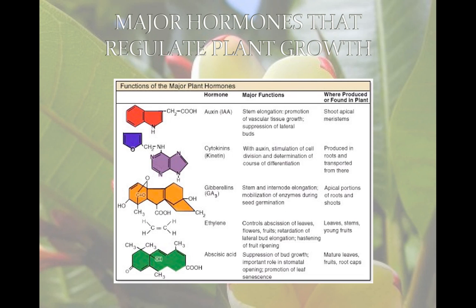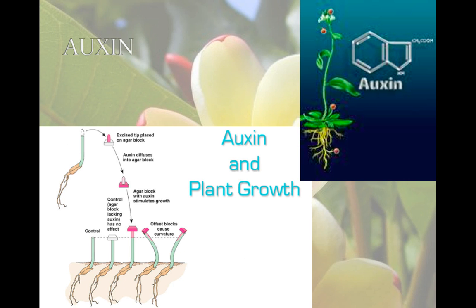There are five major hormones that regulate plant growth. Auxin is a hormone that promotes elongation in shoots. IAA, indoleacetic acid, is a natural auxin. It's produced by the apical meristem at the tip of the shoot, and it moves down the stem and elongates the cells.